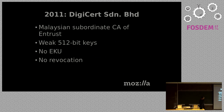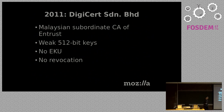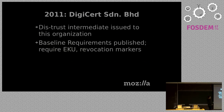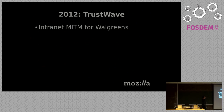Also in 2011, DigiCert SDNBHD — a Malaysian subordinate CA of Entrust, not to be confused with the larger US DigiCert — issued certificates with 512-bit keys (factorable in about three minutes), no key usage information, and no revocation mechanism. We distrusted them completely. Around the same time we published the baseline requirements, which required certificates to include revocation information and permitted use fields.